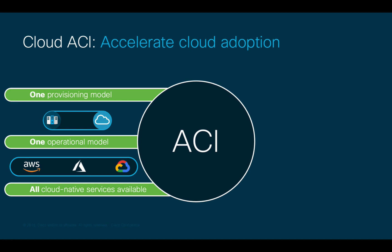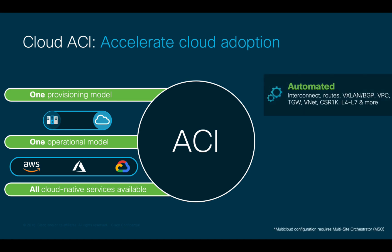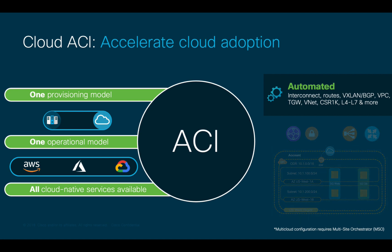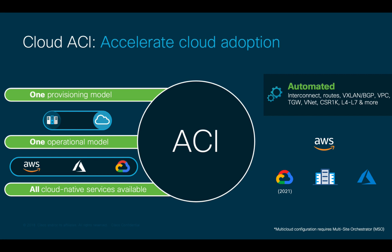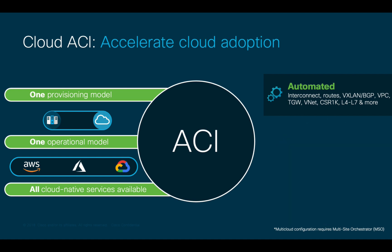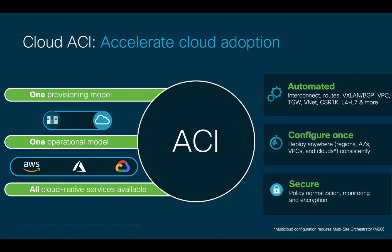Cloud ACI abstracts the network configuration and automatically creates the corresponding network configuration on each cloud. Cloud ACI can run in a single cloud or may also automatically interconnect multiple clouds using VXLAN, BGP, and optionally IPsec through multi-site orchestrator. This approach accelerates cloud adoption and keeps both configuration and security consistent across multiple types of clouds while reducing the learning curve. We will learn how to run and configure Cloud ACI as well as the difference it makes in the next chapters.